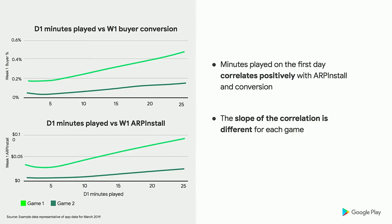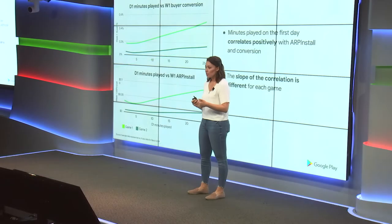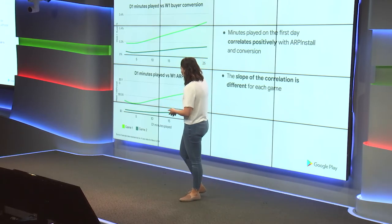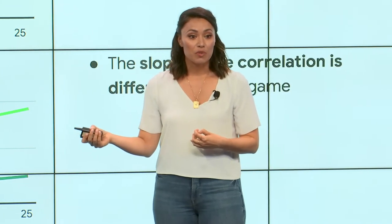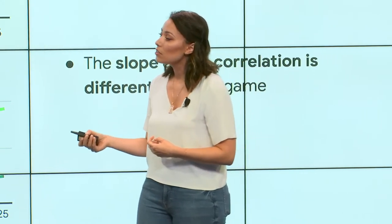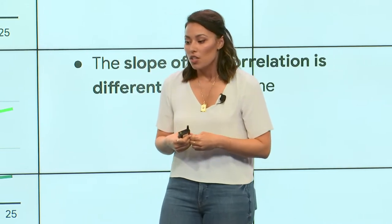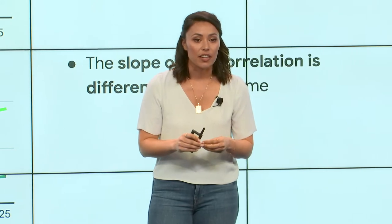Looking at two different games, the top graph shows the correlation between day one minutes played and week one buyer conversion, and the bottom shows day one minutes played versus week one average revenue per install. The trend is the same for both — more engagement means more revenue. But you can see just how much a user's engagement can impact conversion and lifetime value differently across these two games. It comes down to two things: the monetization design and how deep the spend potential is, and how directly monetization and engagement actions are tied together in the core loop.